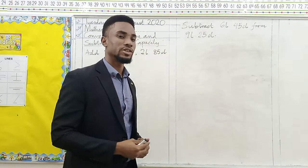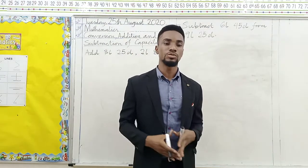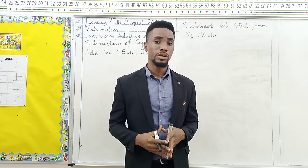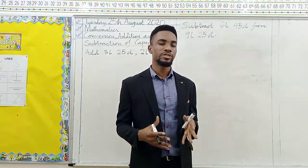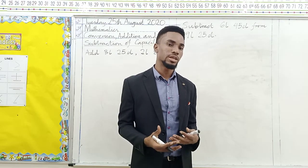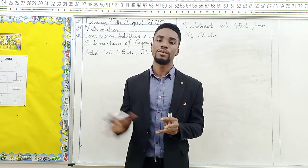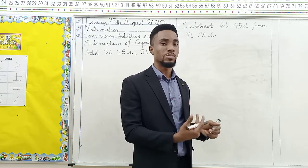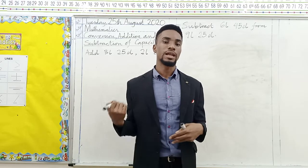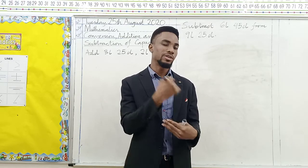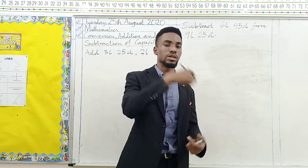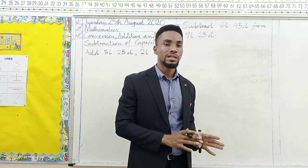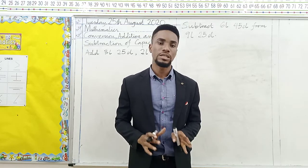Welcome to the second part of this video. In the second part, we are going to be learning how to add and subtract capacities. One thing you have to remember is that capacities are very similar to the way we add and subtract money. When adding and subtracting money, we have the Naira column and the Kobo column. When you add and have more than 100 Kobo, that moves to the Naira column. It's the same thing we do for capacity — the liter has its column, while the centiliter also has its column.